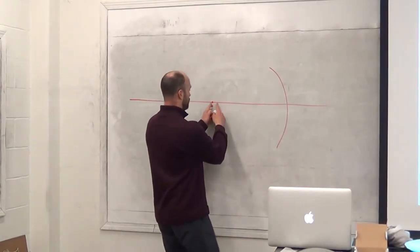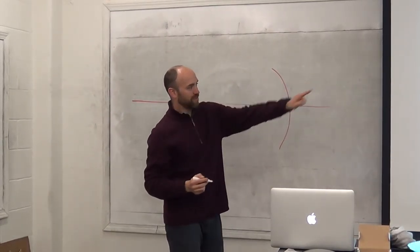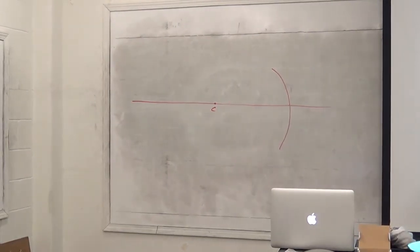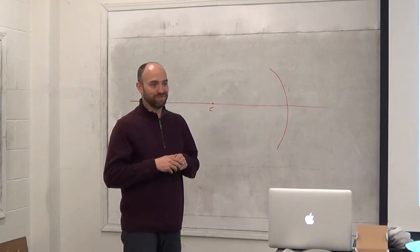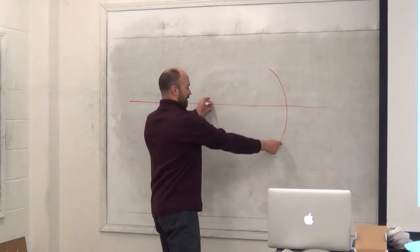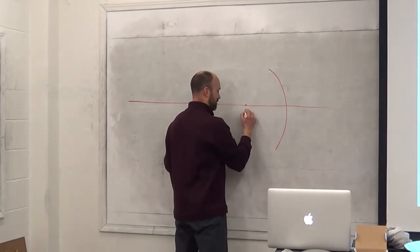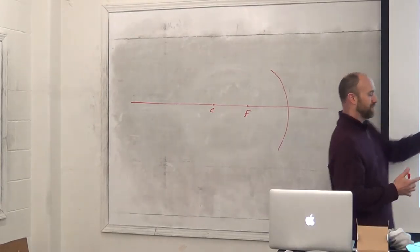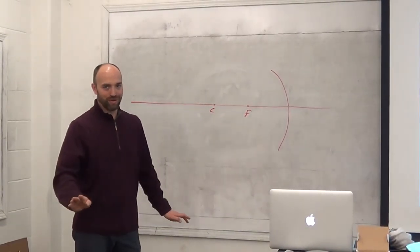Step four: draw your object. I like to draw either an arrow pointing up or a candle — those are two things I can draw. You can draw an elephant if you want. You draw your object wherever the problem tells you to. Then you have to draw three of the four known lines. Here are your four options. It doesn't matter which three you take, you've got to draw three of them. Known line number one: parallel to the optical axis. You take a line from the top of your object going in parallel to the optical axis and measure the height carefully with your ruler.